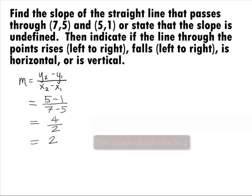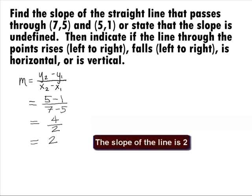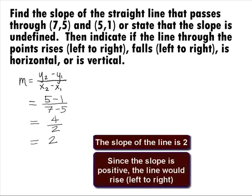So, our final answer for the slope of the line is 2. Since the slope is positive, the line would rise left to right.